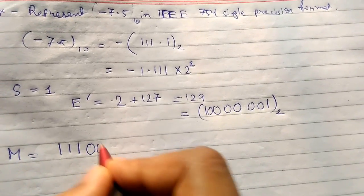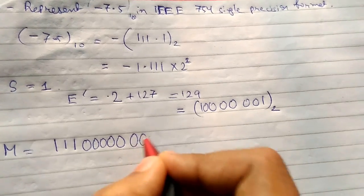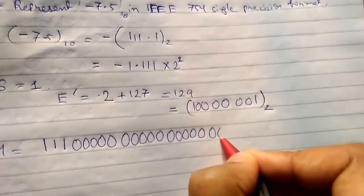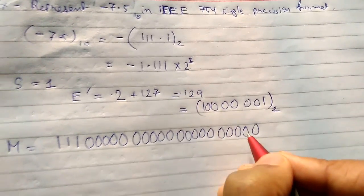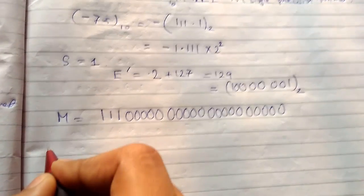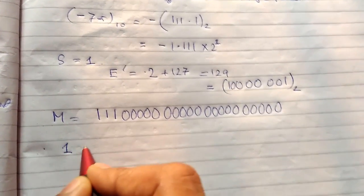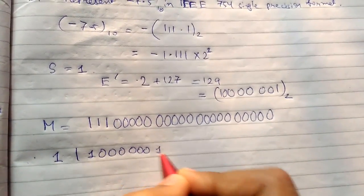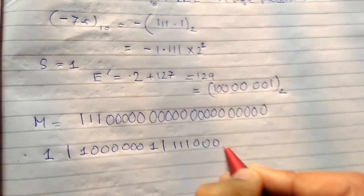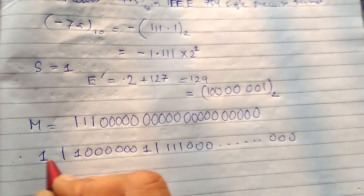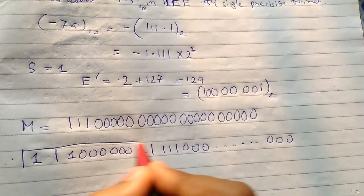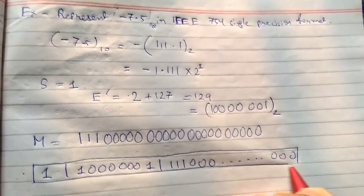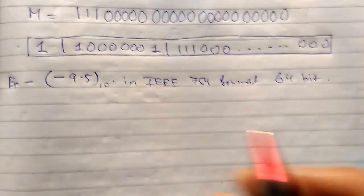We need 20 zeros to fill the remaining 23-bit mantissa. This is the complete mantissa. We then write it in box format to make it look good. That is how you solve problems related to single precision format.